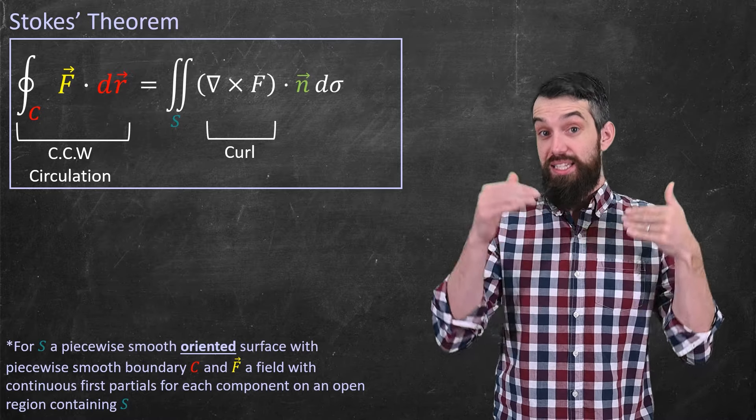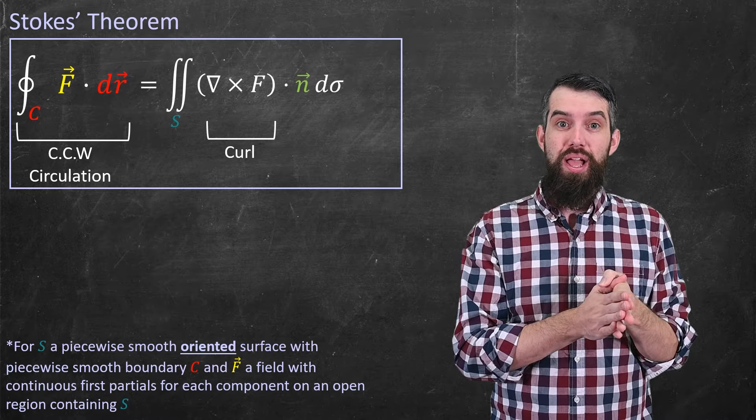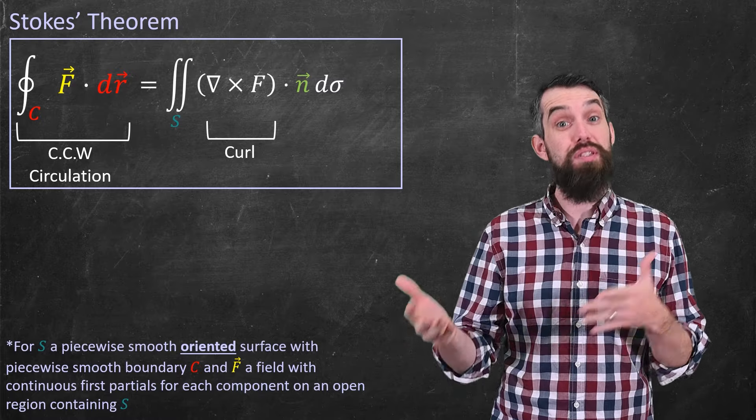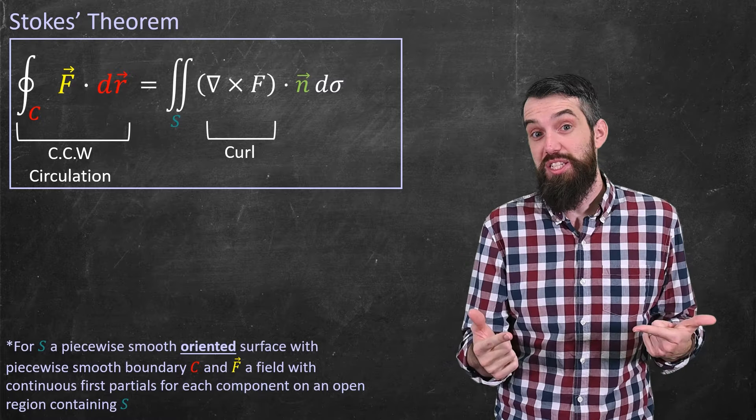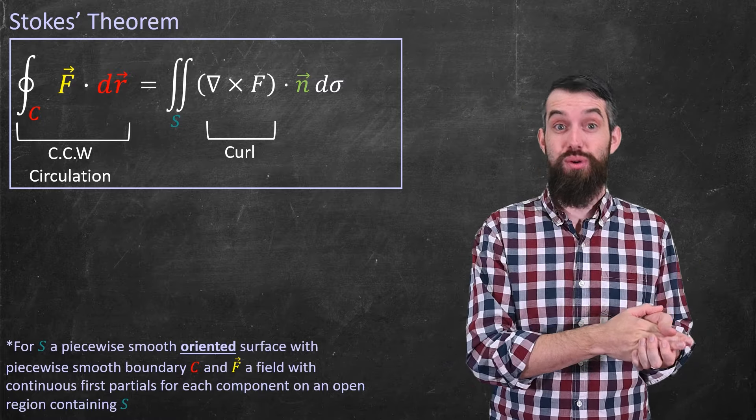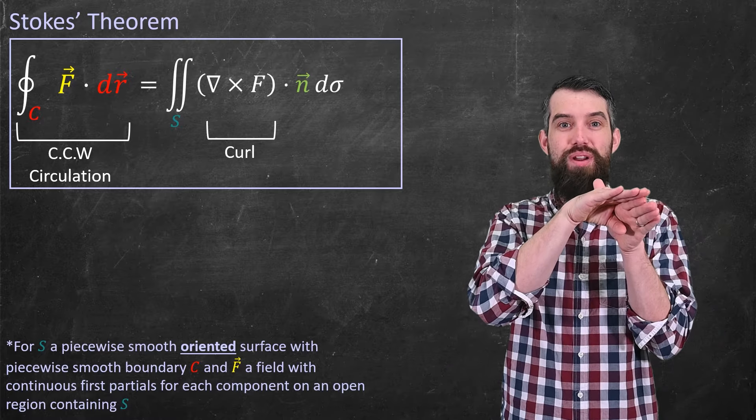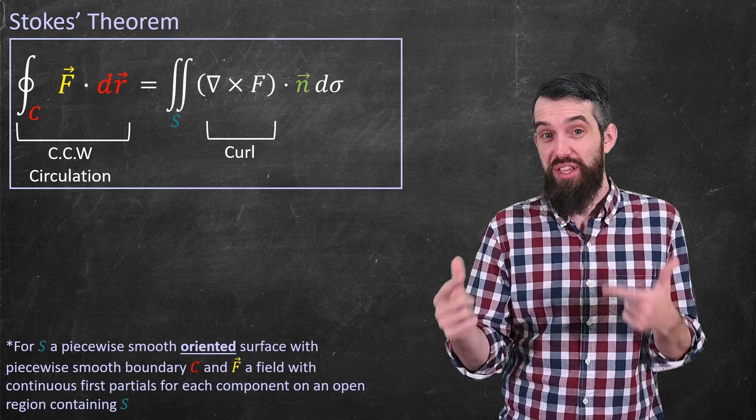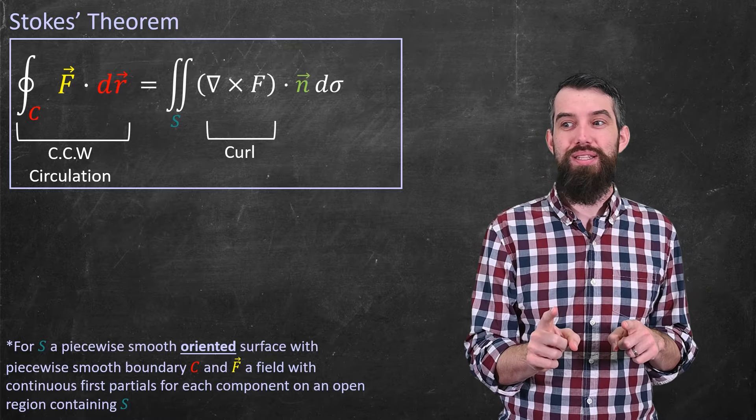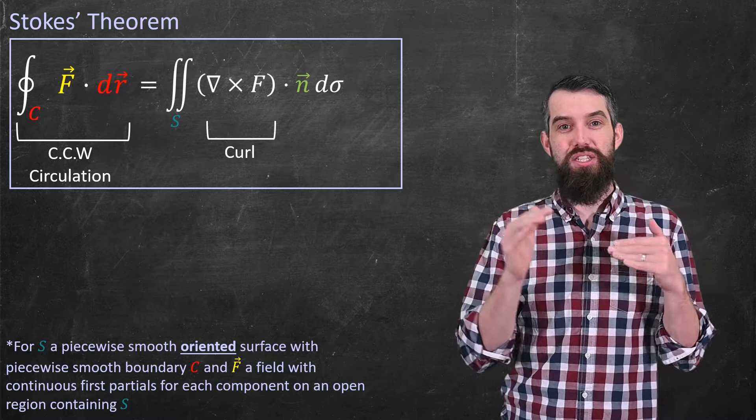I do want to put up the conditions for Stokes' Theorem. The field has to be nice, in this case, continuous first partial derivatives of its components. And the surface also has to be nice, it needs to be a smooth surface, or at least it needs to be piecewise smooth. Like, for example, a cube has those boundary edges and corners, but we still call the cube piecewise smooth. The real one I want to focus in, though, is the demand that it's an oriented surface.